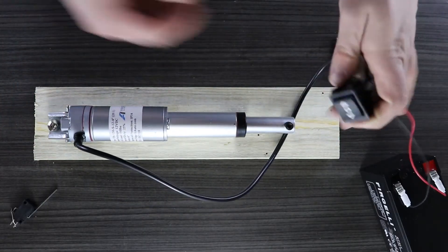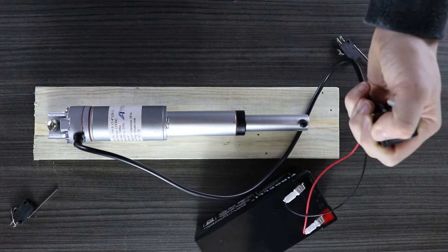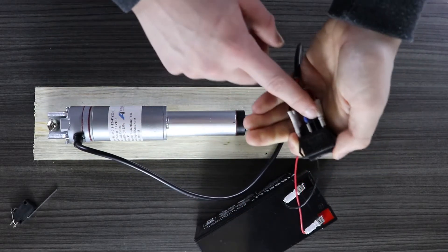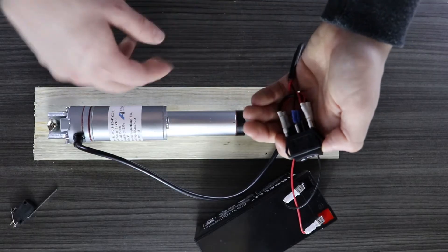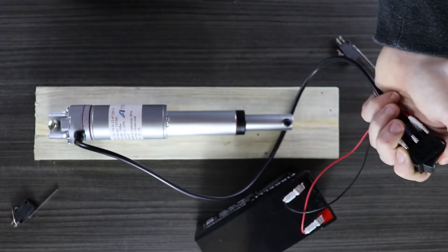To control it I'm just using a rocker switch and a 12-volt battery. If you want to see how to make these connections we've also made a second tutorial on how to hook up the rocker switch to a linear actuator.